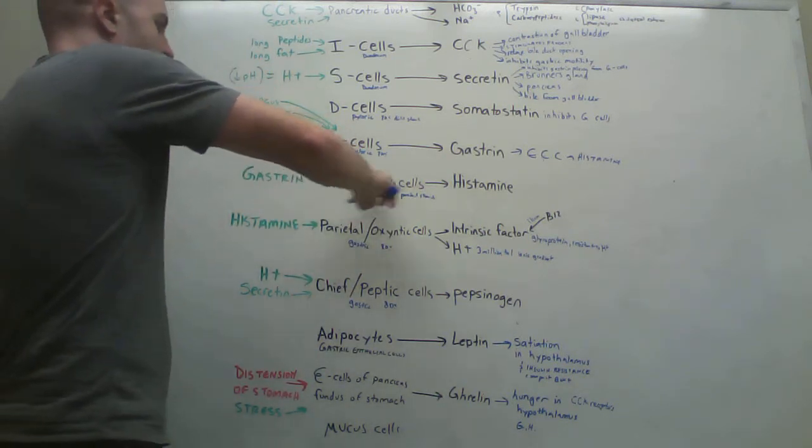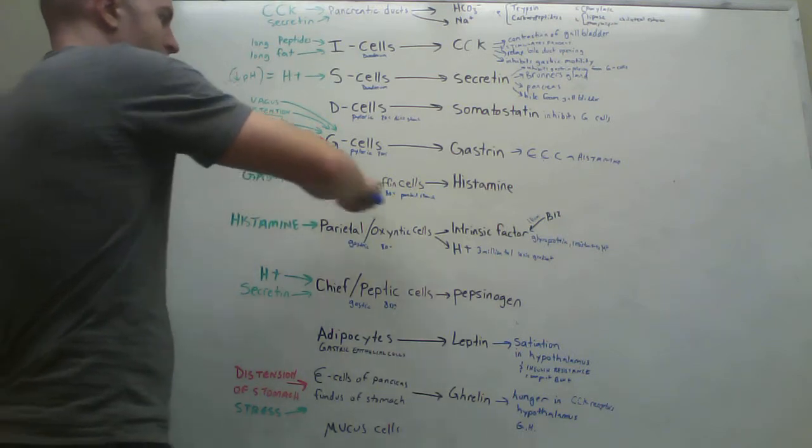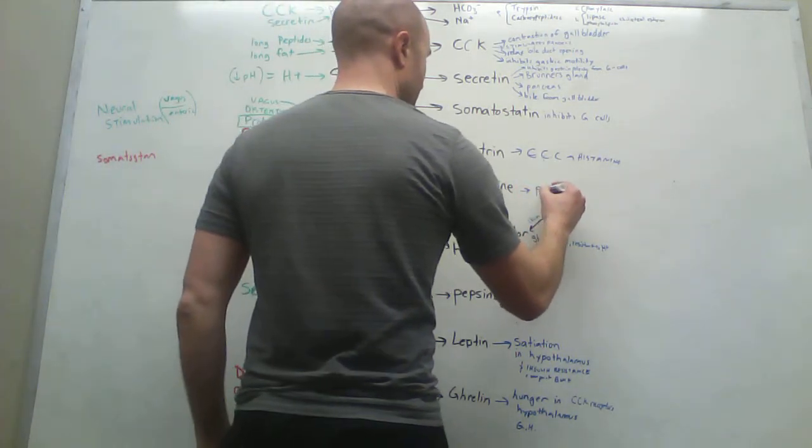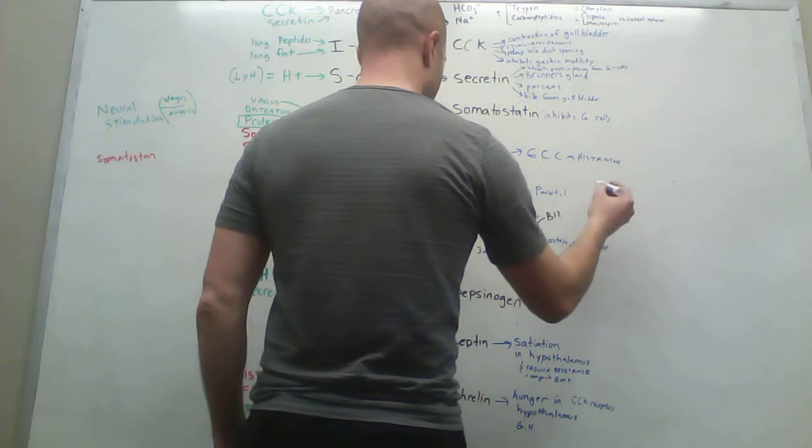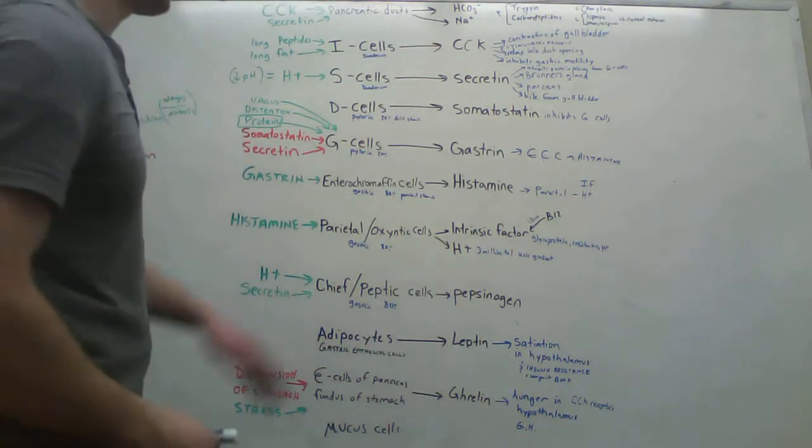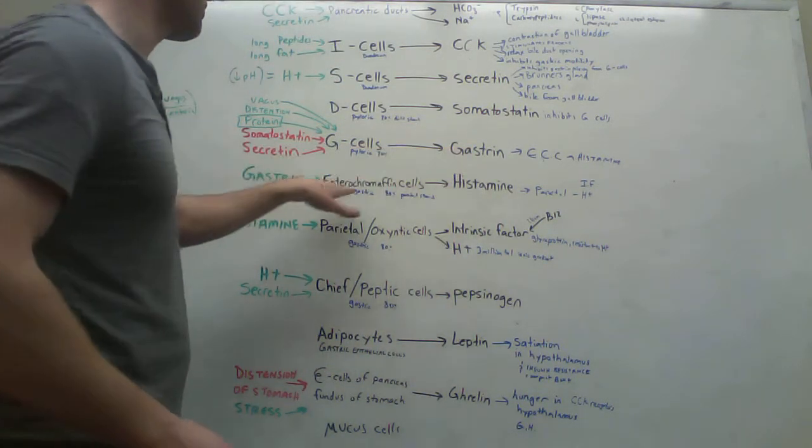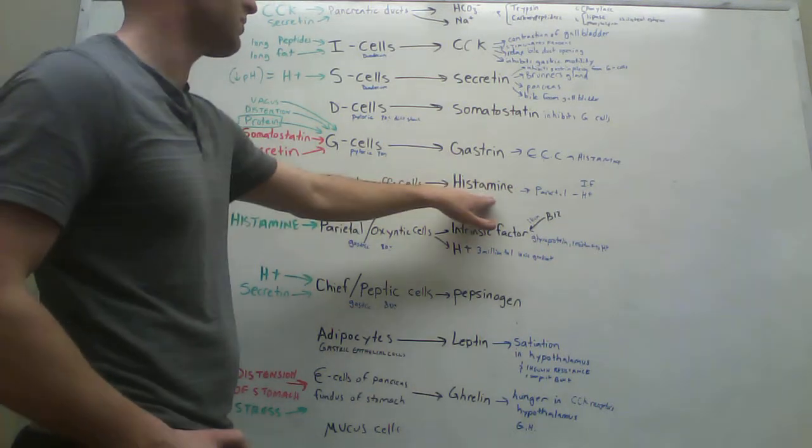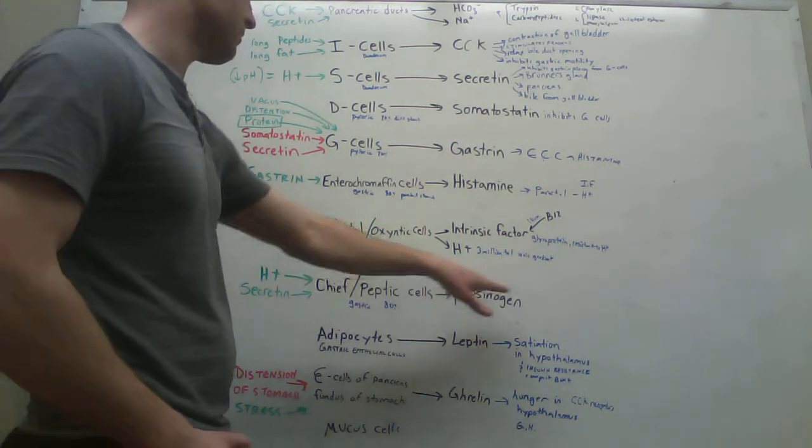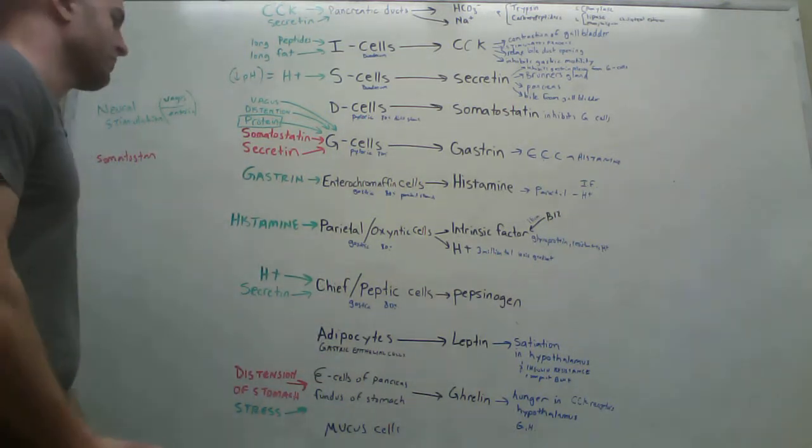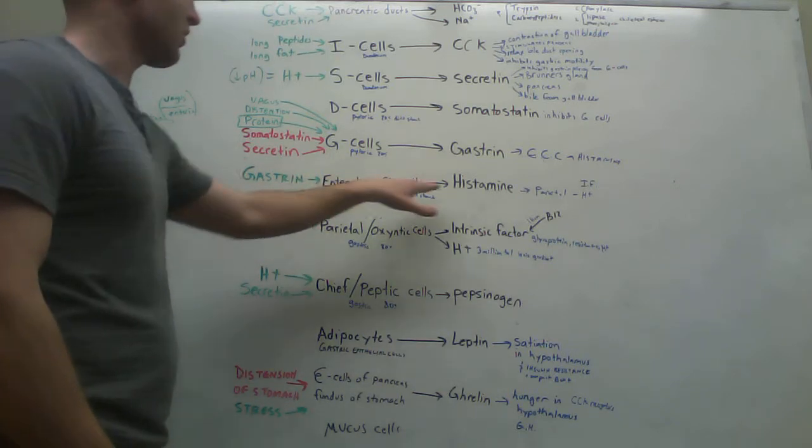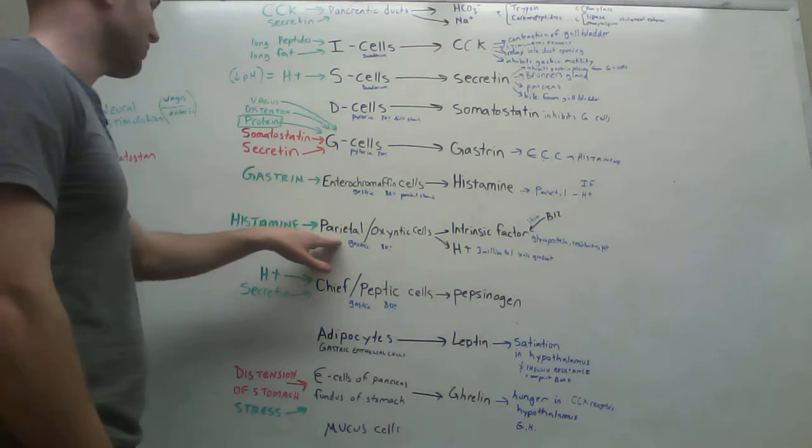So when gastrin stimulates these enterochromaffin cells, they release histamine. And histamine then goes to the parietal cells, then goes to the parietal cells, and has a release its contents, H-plus and intrinsic factor. So remember, G cells, gastrin, gastrin to enterochromaffin cells, enterochromaffin cells to histamine, histamine to parietal oxyntic cells, hydrogen to chief peptic cells, and then pepsinogen, which breaks down to pepsin, which has a lot of breaking down food. A lot of information there. But where were we? Gastrin to enterochromaffin cells, histamine. So here we are down to the parietal or oxyntic cells.